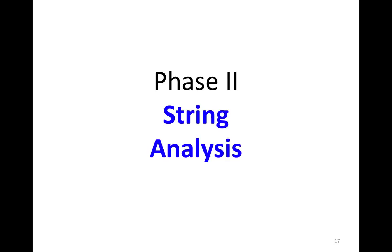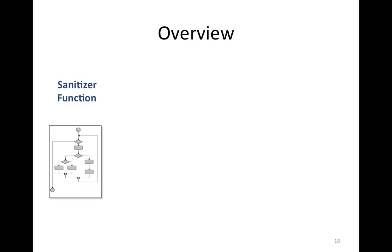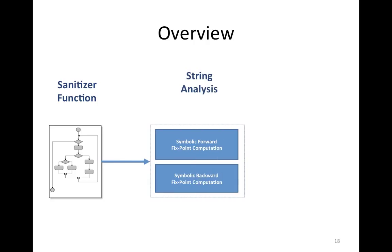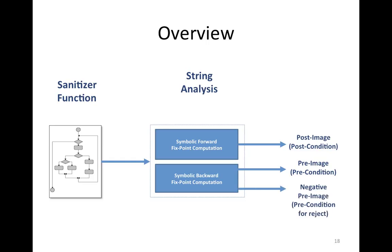The second phase of the analysis is the string analysis. In string analysis, given a sanitizer function that we extracted, we use symbolic forward and backward fixed-point computation to compute three things: the post-image of the function (or the post condition), the pre-image of the function (or the precondition), and the negative pre-image of the function (or the precondition for reject).